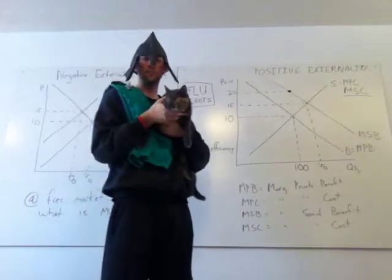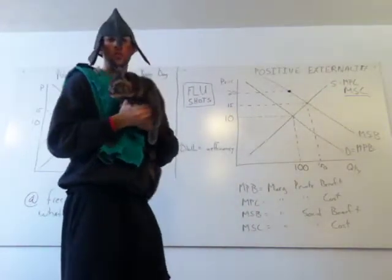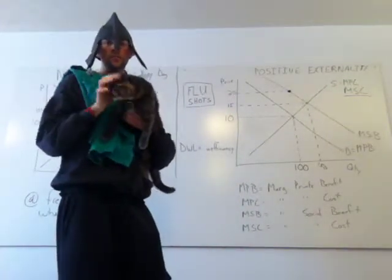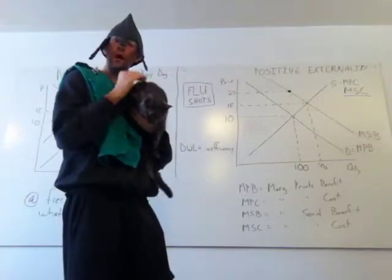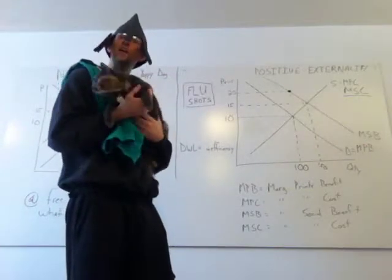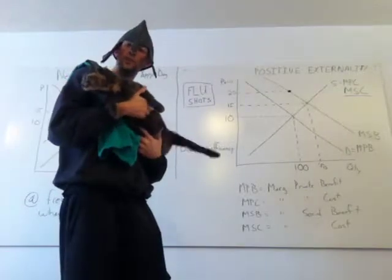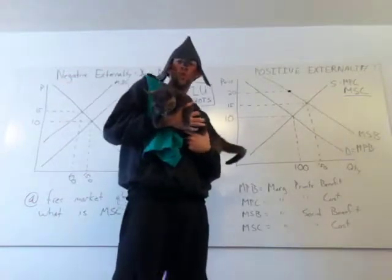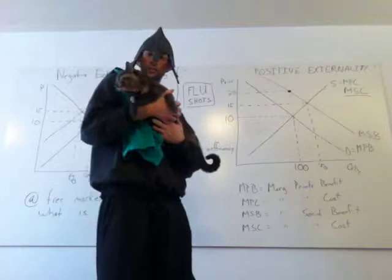So, this we haven't done in class, but this is kind of the next step here. When we're talking about externalities, we know that private markets and individuals on their own aren't doing a very good job, or they're not doing as good as they should to produce the optimal quantity for everybody, for our entire society.